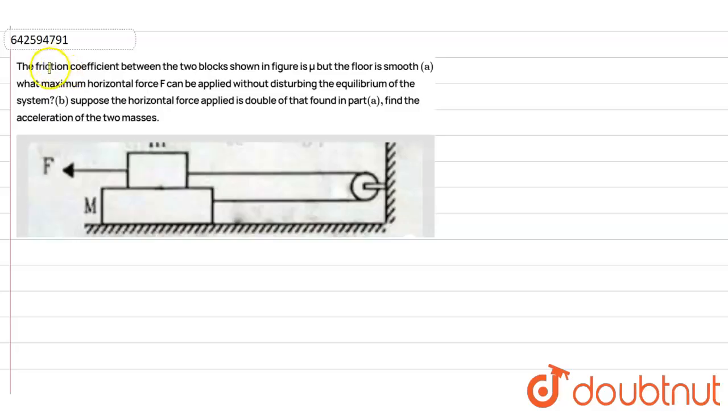Hello friends. So let's see this question. The friction coefficient between two blocks shown in the figure is mu, but the floor is smooth. So first find what maximum horizontal force F can be applied without disturbing the equilibrium of the system.